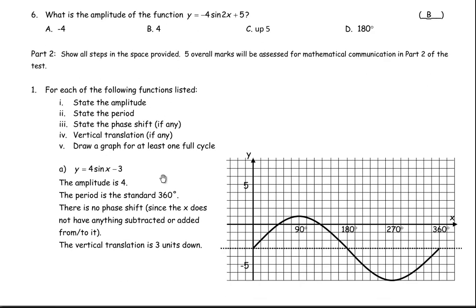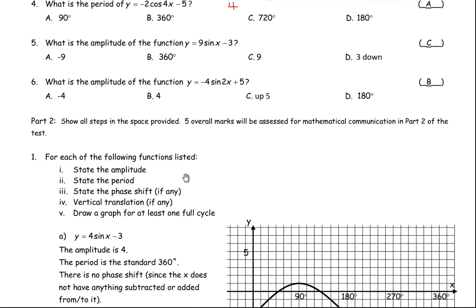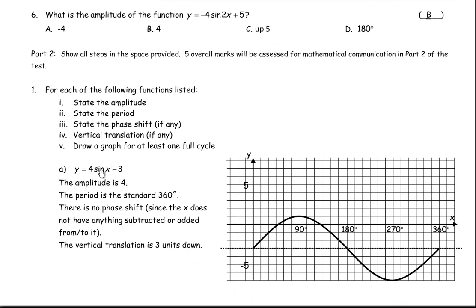On to question number 1 in the second part, with two questions — A and B. You're given a function and asked to state the amplitude, period, phase shift, and vertical translation, and draw a full cycle. The function is y equals 4 sin x minus 3. The amplitude is 4. The period is the standard 360 degrees. There's no phase shift because nothing is subtracted or added to x. The minus 3 is subtracted from the whole 4 sin x function, so the vertical translation is 3 units down. I'll do the vertical translation first — that's the line drawn at negative 3 horizontally.